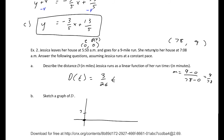To sketch this graph, it goes through the point (0, 0) and has a slope of 3/26. So it increases 3 in the y-direction for every 26 in the x-direction. That is our function d(t) = (3/26)t, restricted to t greater than 0.